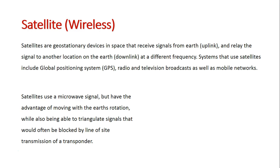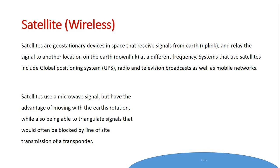The next type we're going to look at is satellite. Satellite tries to eliminate the line of sight barriers that can often happen, as geographical sites often have buildings and things that get in the way, so transponders may not be effective in getting the signal around.